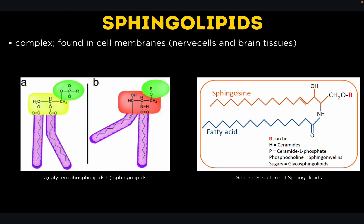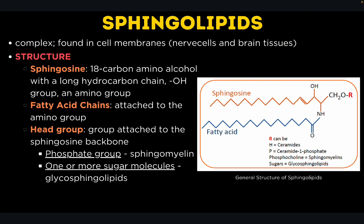Next, let's discuss sphingolipids. They are complex lipids found in cell membranes, particularly in nerve cells and brain tissues. The general structure of sphingolipids includes sphingosine, an 18-carbon amino alcohol with a long hydrocarbon chain, a hydroxyl group, and an amino group. Sphingolipids also consist of fatty acid chains connected to the amino group, and a head group attached to the sphingosine backbone, which varies depending on the type of sphingolipid.